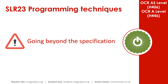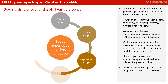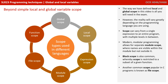If you've got an extra 30 seconds, we've just got one more bit we'd like to mention. The way we've defined local and global scope in this video is all you need in your exam. However, the reality will vary greatly depending on the programming language you're using. Scope can vary from a single expression to an entire programme with multiple levels in between. Modern modular programming allows for what's called separate module scope, where the names are visible within the module but not outside it.